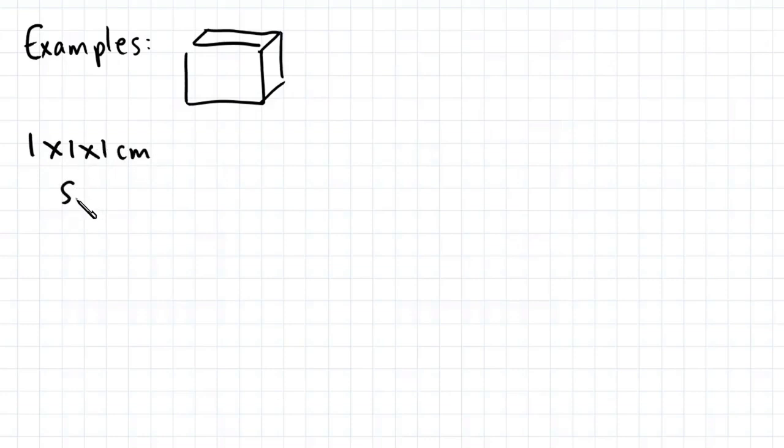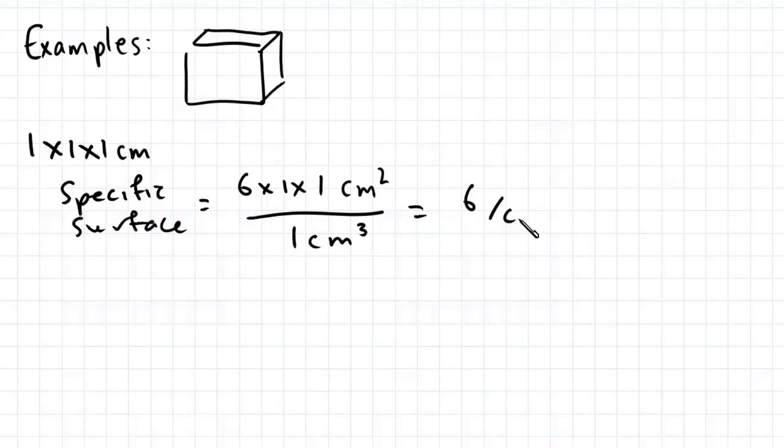The specific surface equals the surface area, so that's 6 squares of 1 by 1 square centimeters, divided by the volume, which is 1 cubic centimeter. This works out to be 6 per centimeter.